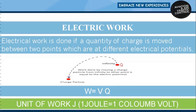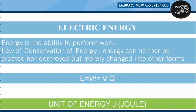The SI unit of work is the Joule. One Joule of work is done when a charge of one Coulomb moves through a potential difference of one Volt. Energy is the ability to perform work. The law of conservation of energy states energy can neither be created nor destroyed, but merely changed into other forms.